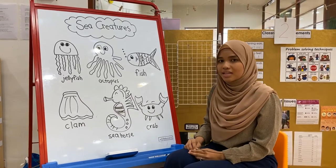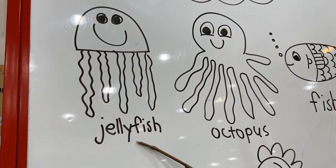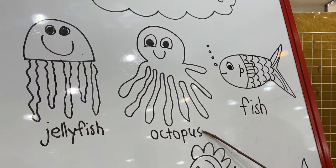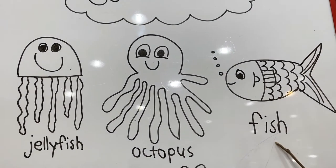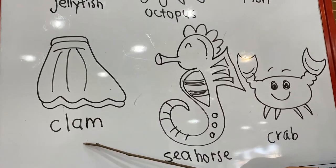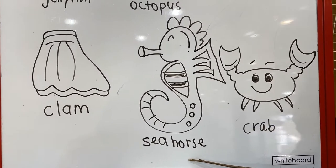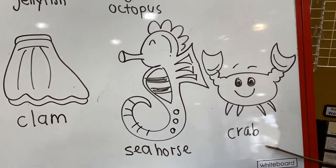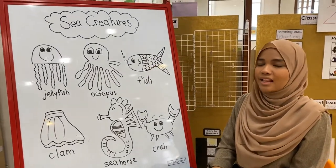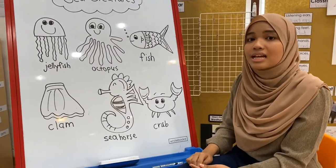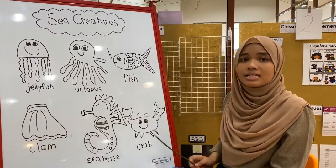Now it's your turn to name these sea creatures with me. What is this, friends? That's right, that's a jellyfish. How about this one? Good job, this is an octopus. This is a clam. And this one? This is a seahorse. And last but not least, this is a crab. Can you name me other sea creatures? If you can, whisper it to your mom and dad if they're beside you. Good job, friends. There are more than these sea creatures that can be found in the sea or ocean. But how do they move in the sea and the ocean? They swim in the sea and in the ocean.